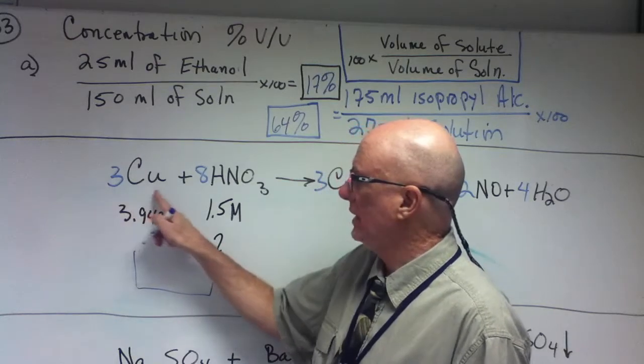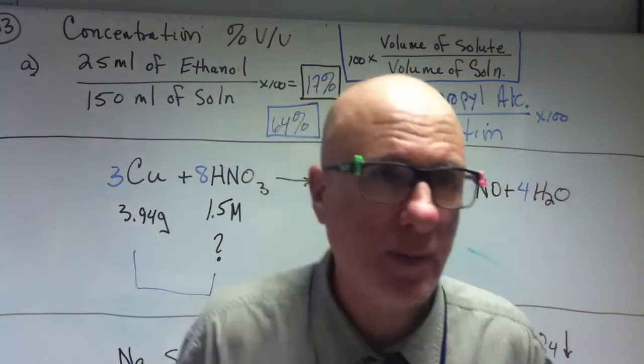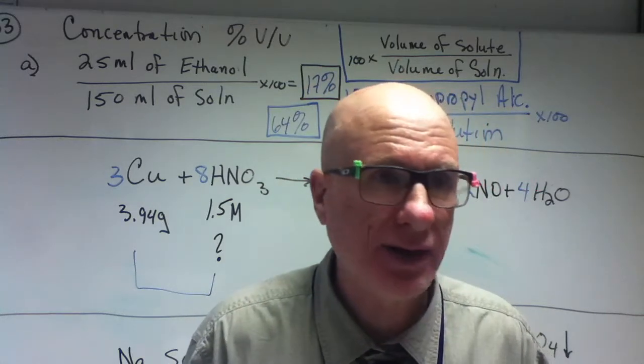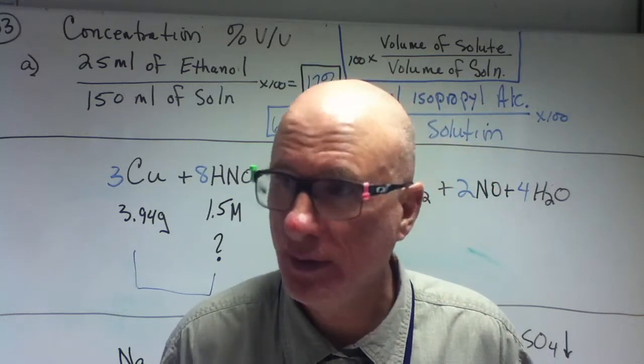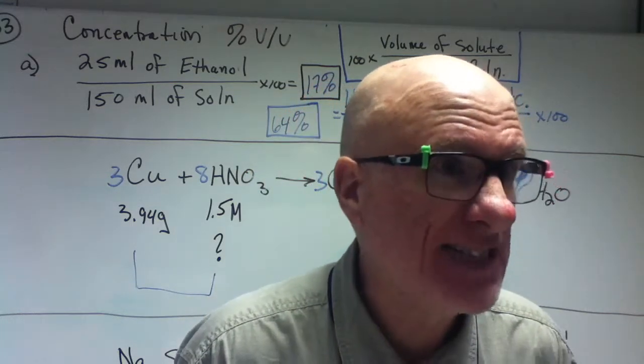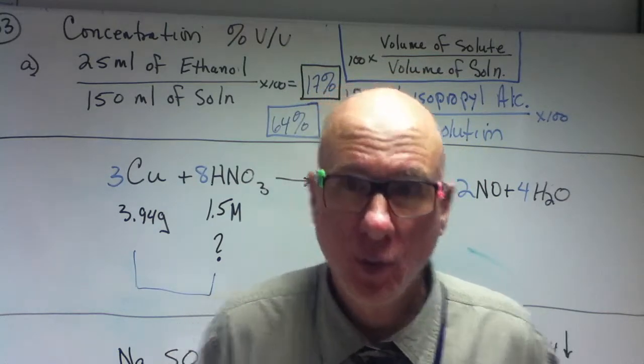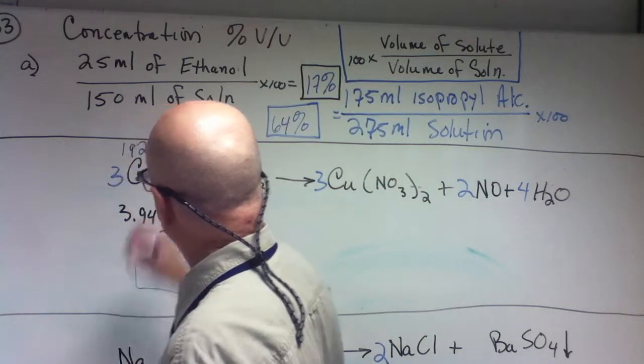What's 3 moles of copper? Come on guys, get out your calculators, let's work. Shall I be your periodic table for you? Copper has a mass of 64. That's the mass number of copper. 192. Good.